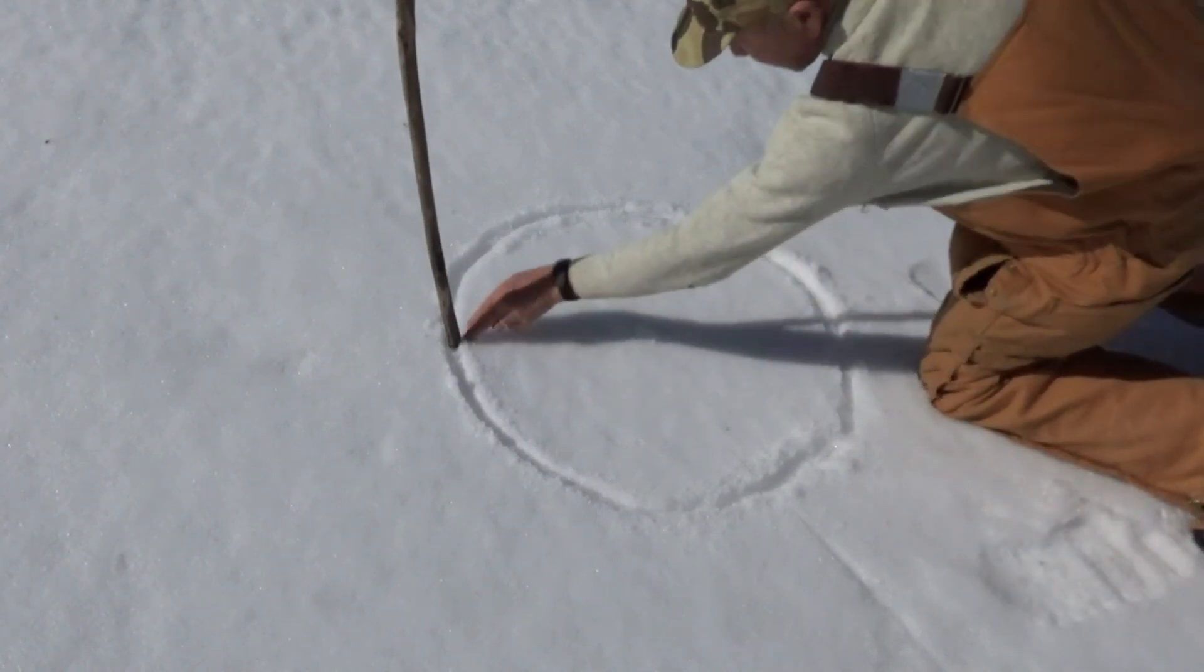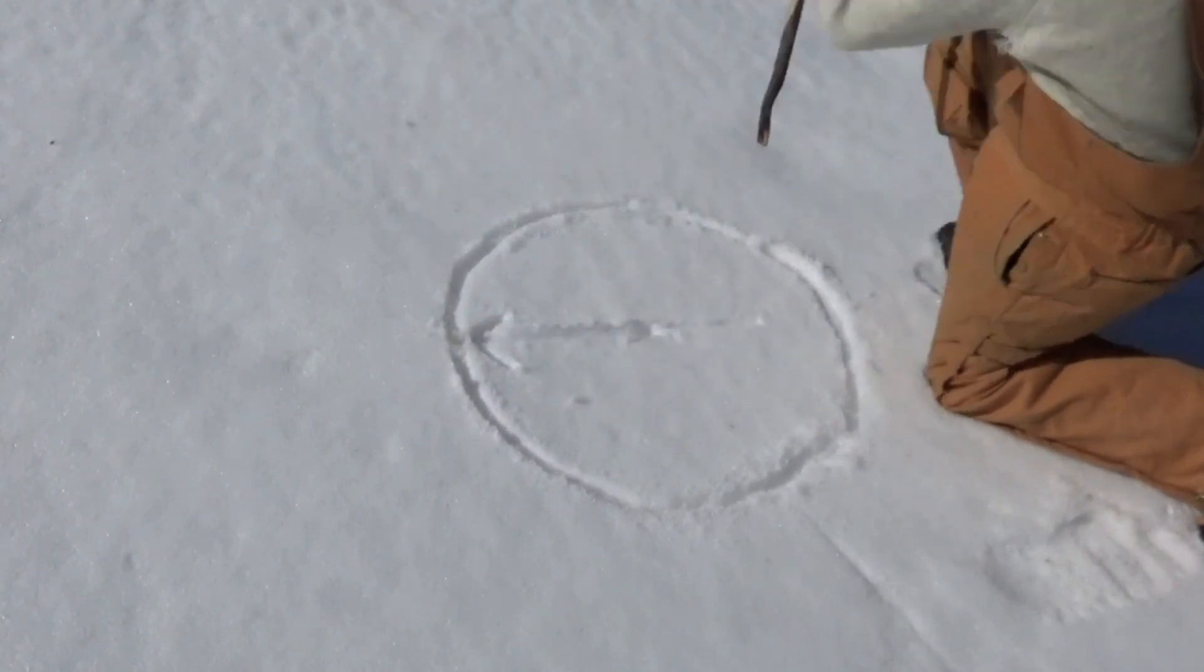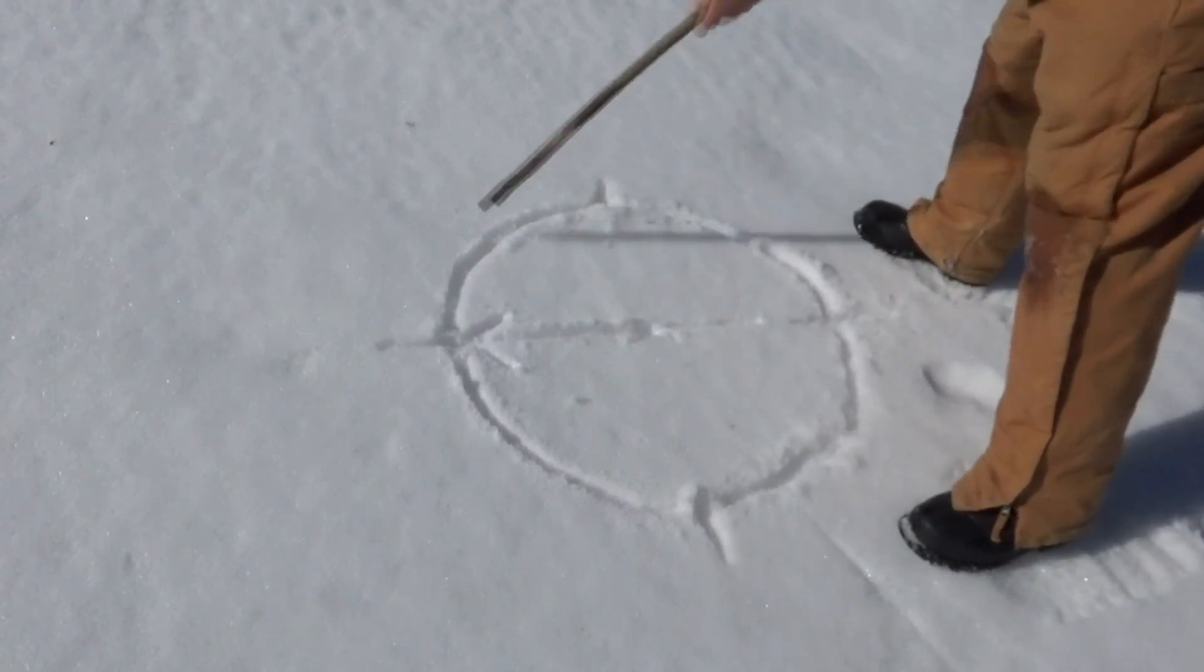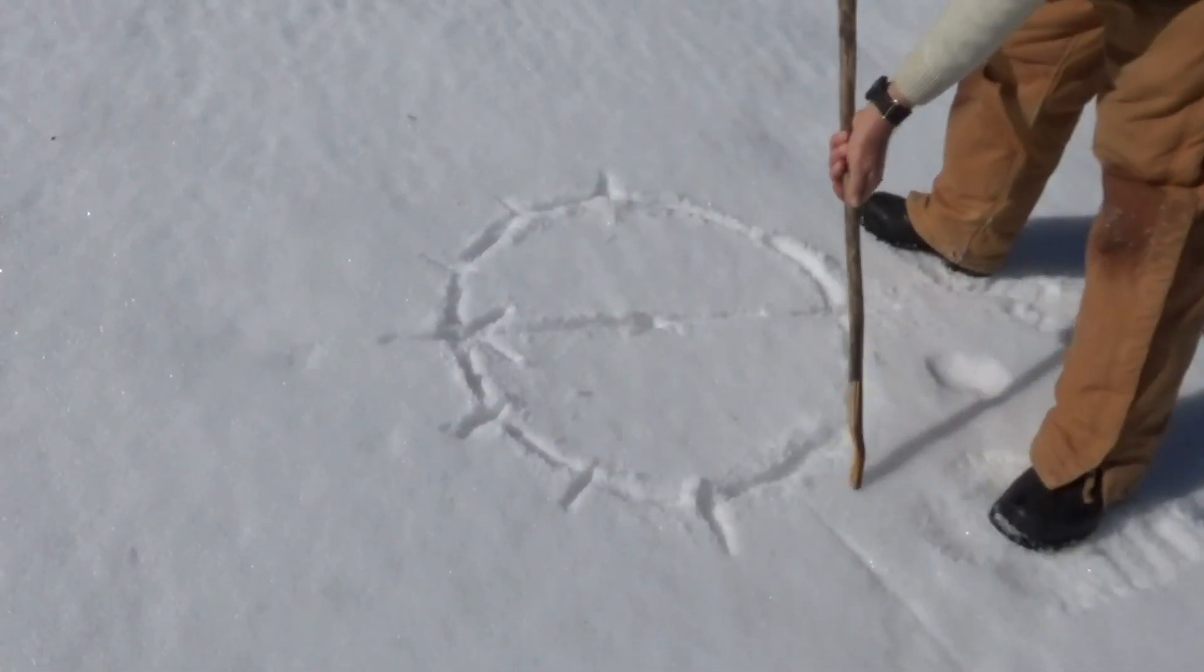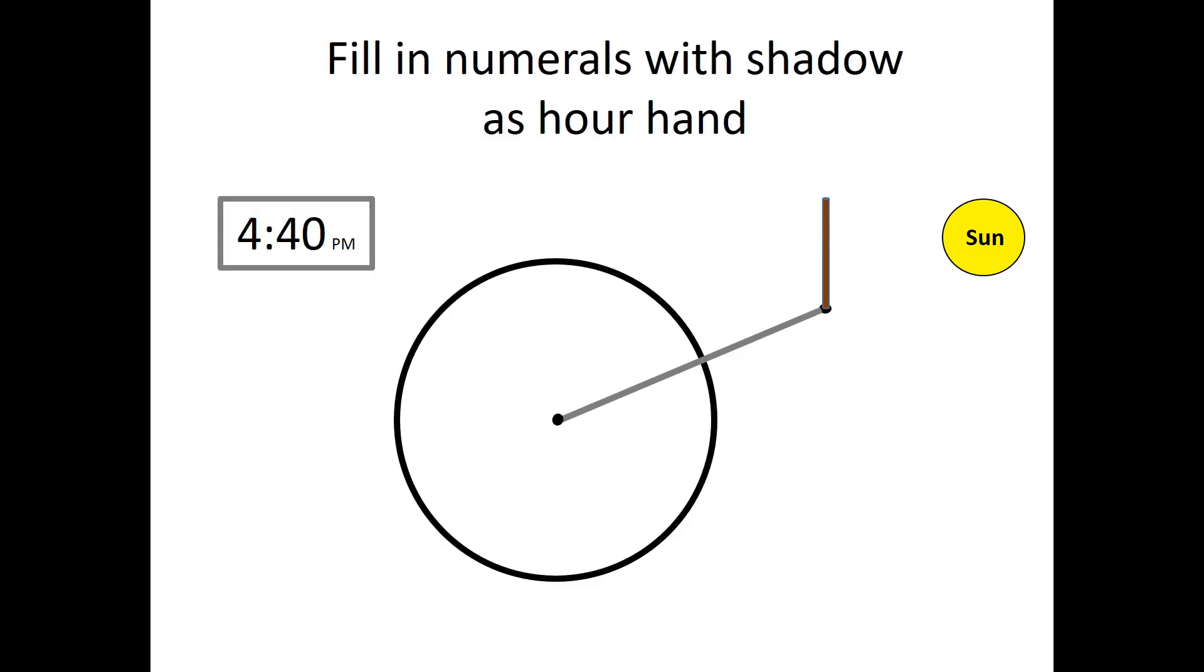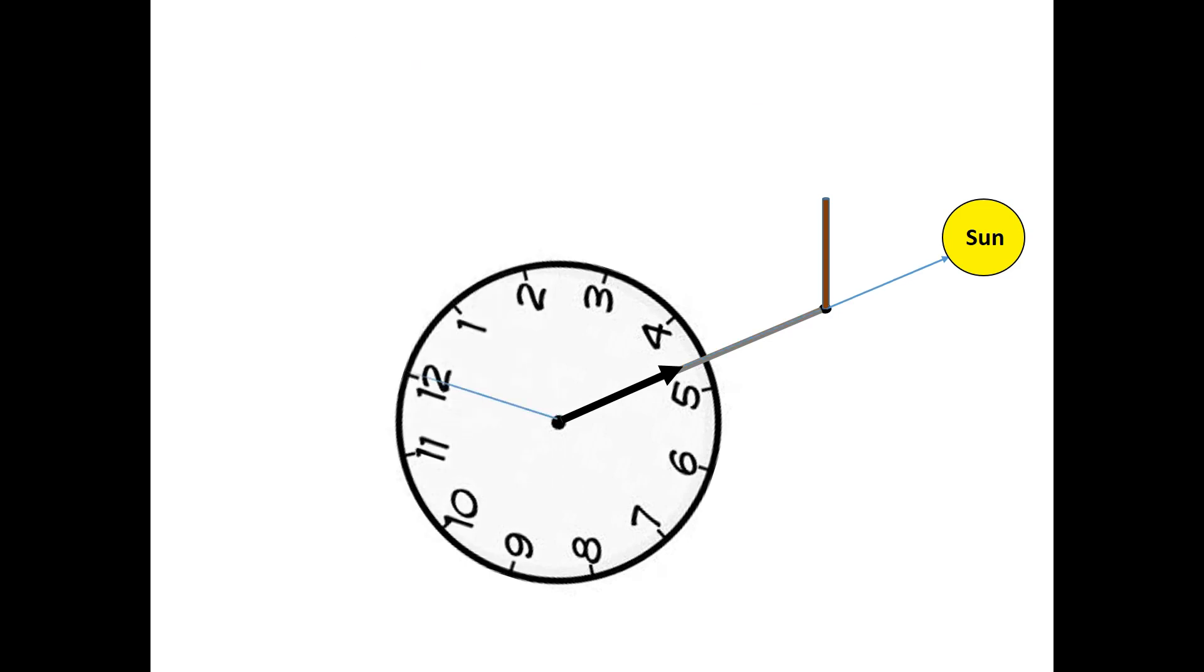Now, I draw in the hour hand by tracing the stick's shadow. Next, I make 12 evenly spaced marks around the edge of the circle representing the 12 numerals on the face of a conventional watch dial. Based on the time indicated on your digital watch, now fill in the numerals. I draw a line now from the center point to the 12 and draw another line exactly midway between the 12 and the hour hand. That line points approximately south.